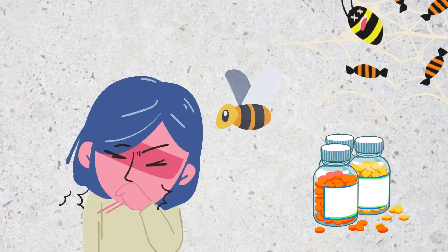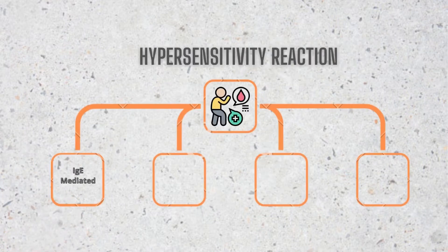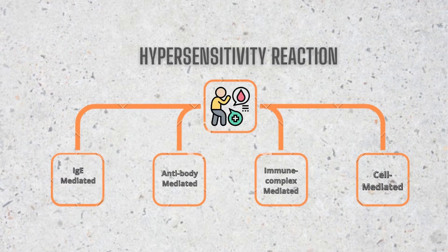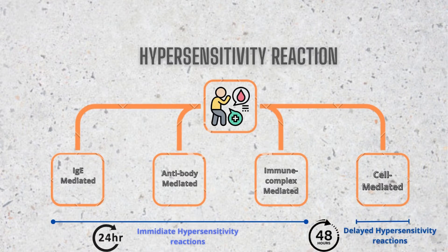To understand the pathomechanism of anaphylaxis, we need to understand hypersensitivity, since anaphylaxis is a form of hypersensitivity reaction. There are four types: first, IgE-mediated hypersensitivity reaction; second, antibody-mediated; next, immune-complex-mediated reaction; and lastly, cell-mediated hypersensitivity. The first three types are considered immediate hypersensitivity reactions because they occur within 24 hours.